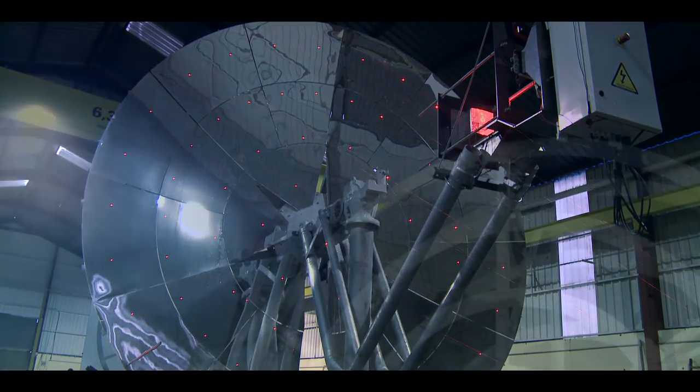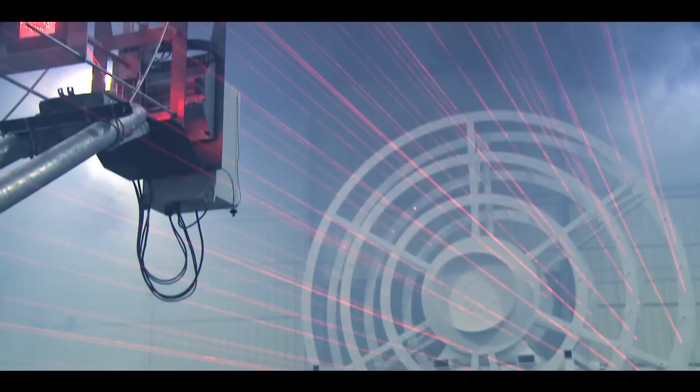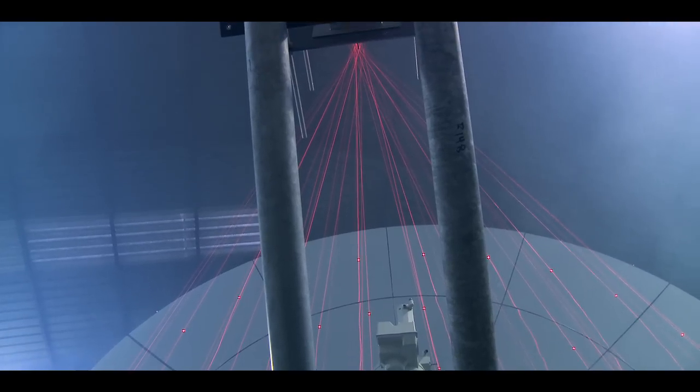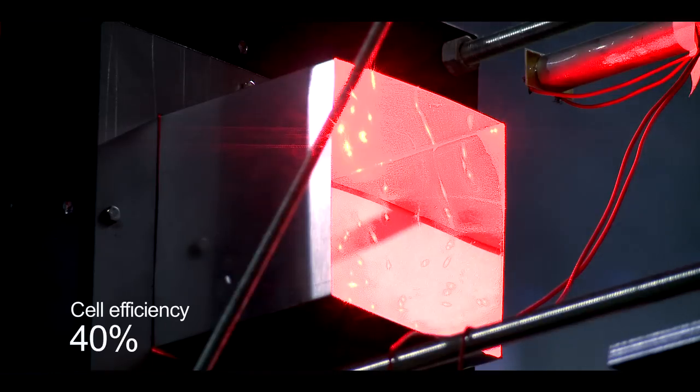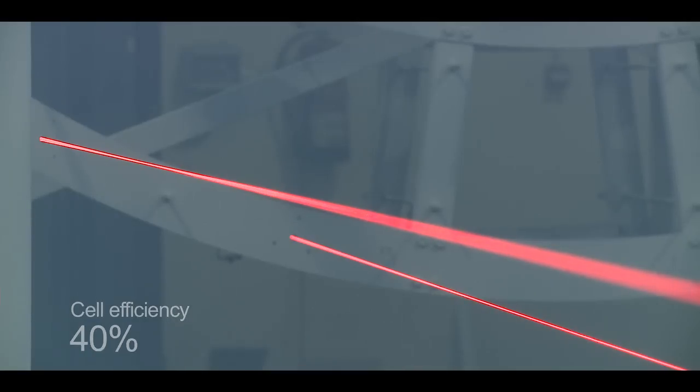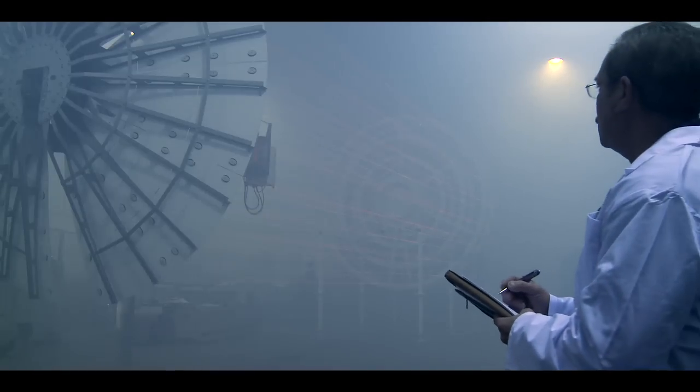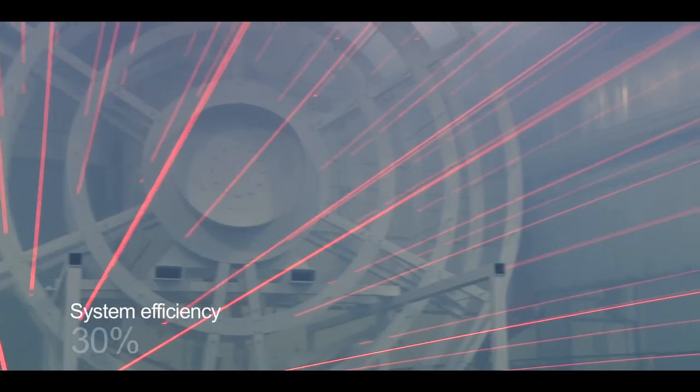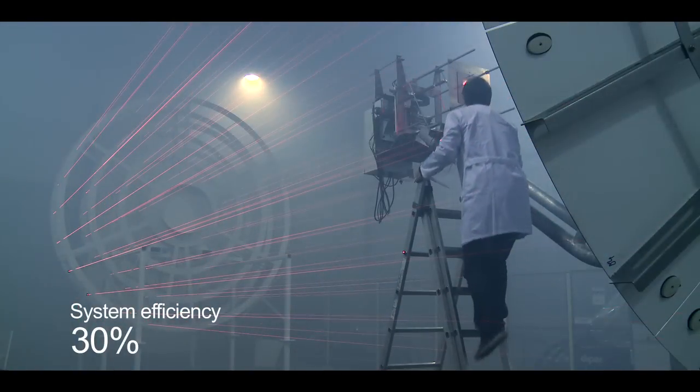CPV technology is based on high-efficiency triple junction cells, used in the aerospace industry since the 90s, reaching conversion rates exceeding 40%, well above traditional silicon systems. Currently, CPV systems reach energy efficiencies approaching 30%.